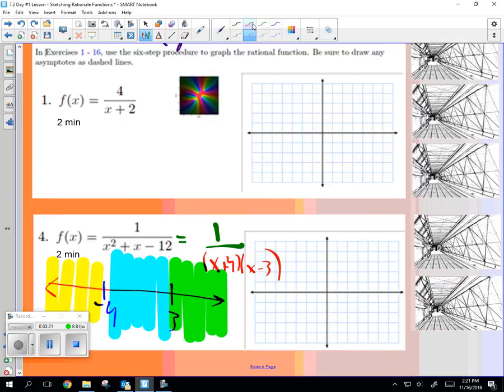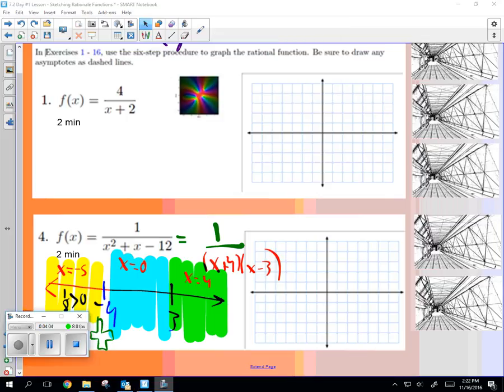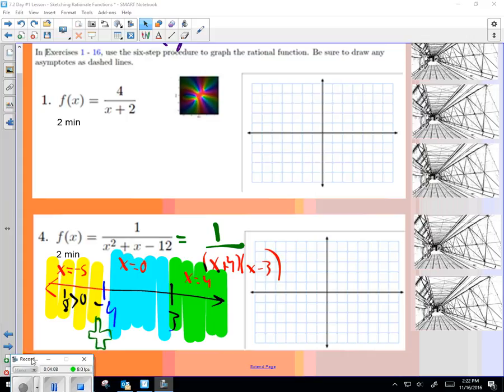So let's test them out. Let's try x equal to negative five. What's a nice number between three and negative four? Zero. How about three to infinity? Four. Something like that. So when I put those in, I just want to see if it's positive or negative. One over negative five plus four is negative one, negative five minus three is negative eight. Negative one times negative eight is one-eighth. Is that greater than or less than zero? Greater than. So we're going to have a positive section here in yellow.